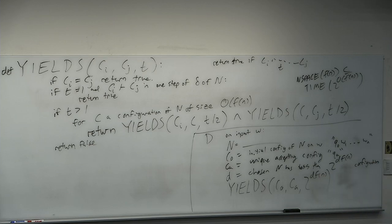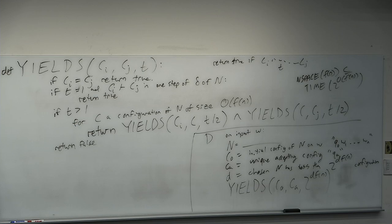How do we know how to choose D? You could compute it directly — D should be like log(alphabet length) / 2 + 1. Alternatively, just try D = 1, D = 2, D = 3 until it works. We don't care about time anyway, so brute-force search for the time bound on that machine.